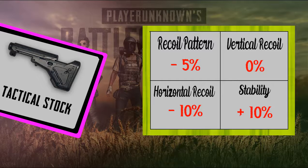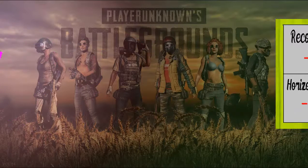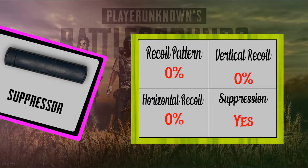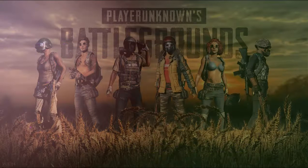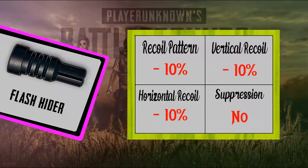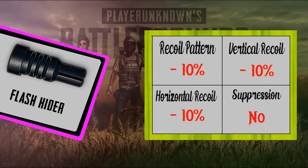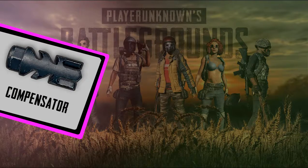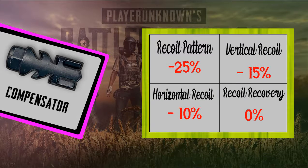For muzzle attachments on assault rifles: the suppressor does nothing but suppress the sound. The flash hider reduces recoil pattern, vertical recoil, and horizontal recoil each by 10% — it's great. The compensator reduces recoil pattern by 15%, vertical recoil by 15%, and horizontal recoil by 10%.